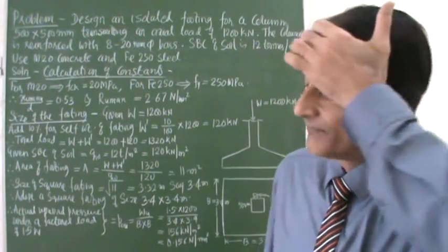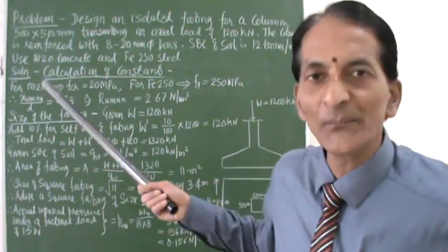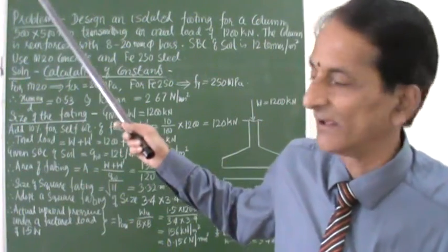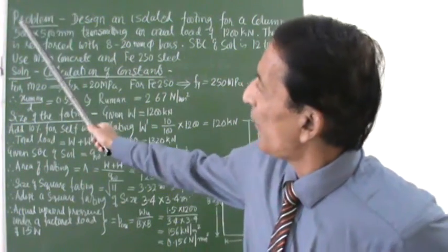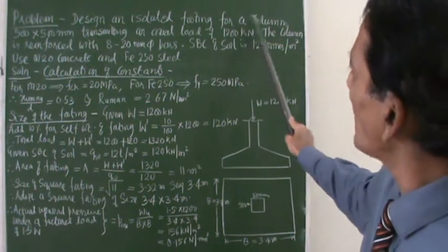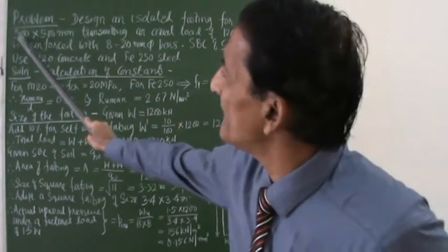Good morning my dear friends. Today we will begin with a problem on isolated footing. The problem says: design an isolated footing for a column 500 by 500.